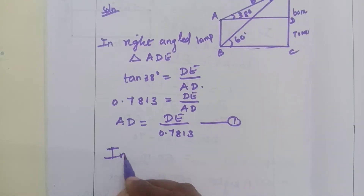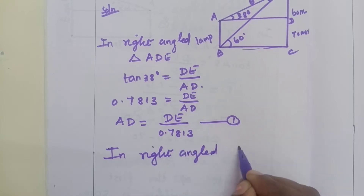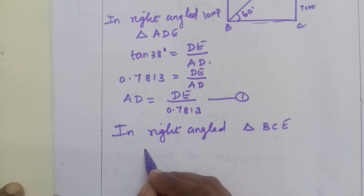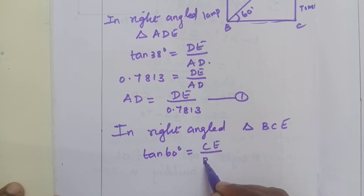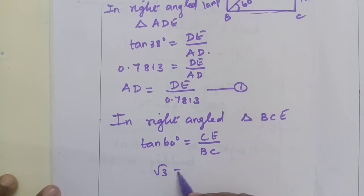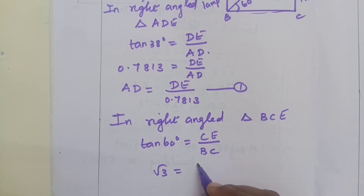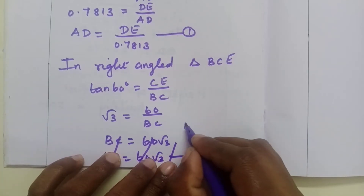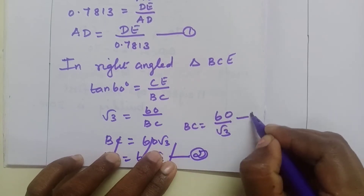And in triangle BCE, find out. In right-angled triangle B, C, E: tan 60 degrees equals CE by BC. So tan 60 equals root 3, equals CE. We can see CE value equals 60, by BC. Cross multiply: BC equals 60 by root 3. This is equation number 2.